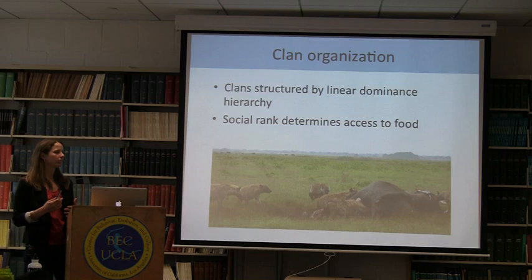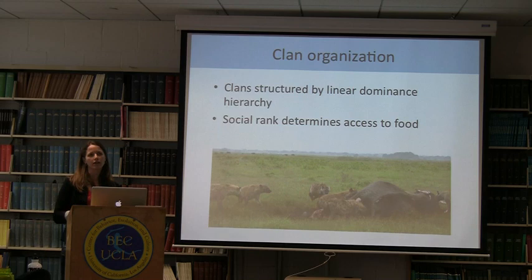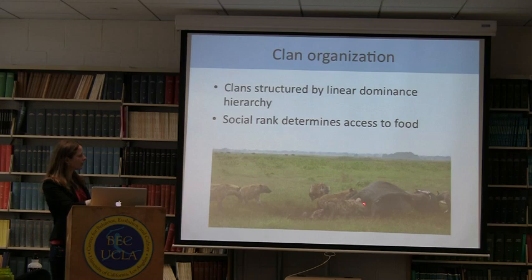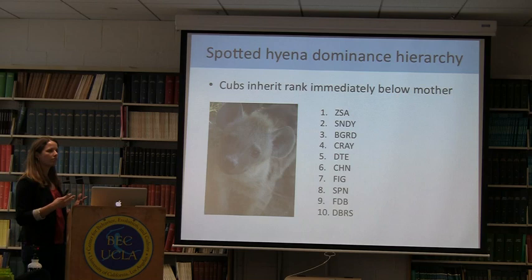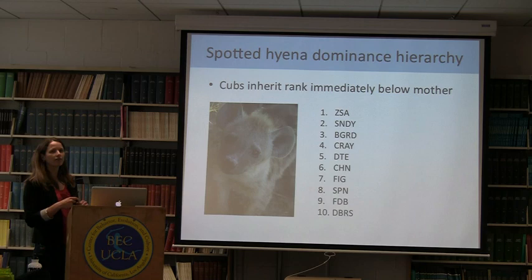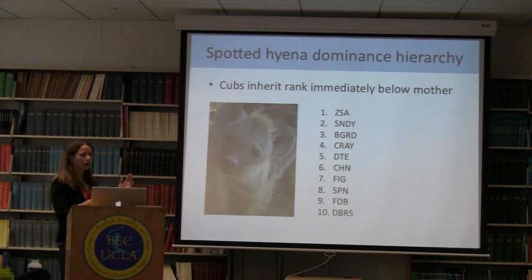Within clans, which are more typical of primates — particularly Cercopithecine primates — than other carnivores, clans are structured by linear dominance hierarchies such that each hyena has a rank position, and that social rank determines their priority of access to food. Higher-ranking females and animals are the ones feeding; lower-ranking animals are around the periphery. Rank within the dominance hierarchy is inherited from the mother. Cubs inherit the rank directly below their mother. So if Zsa Zsa is ranked number one, her cub Smith will inherit rank number two.